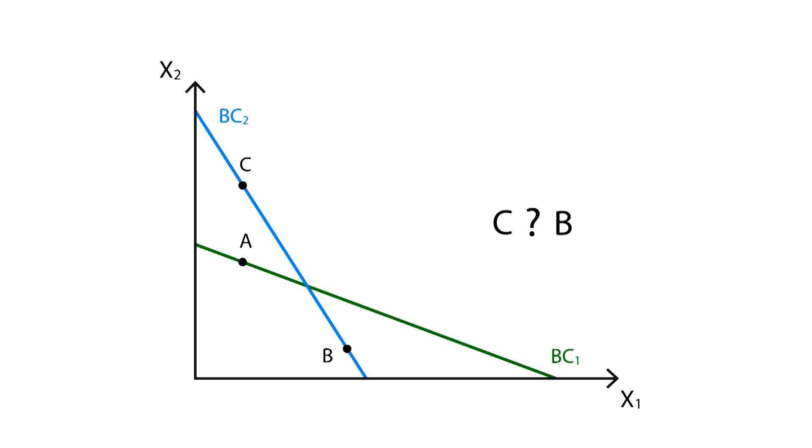In order to solve this dilemma, we use what we call the strong axiom of revealed preference, which adds transitivity. This axiom adds the idea of indirectly revealing preferences. If C is chosen over A, and A over B, as we saw in the first example,